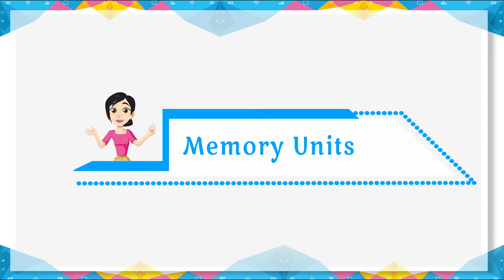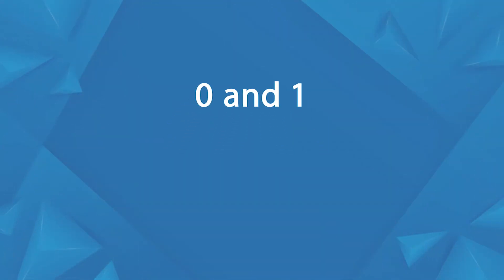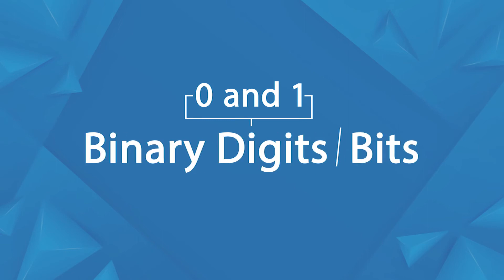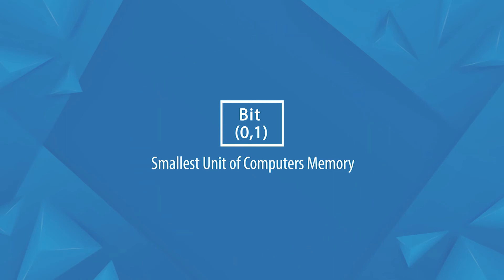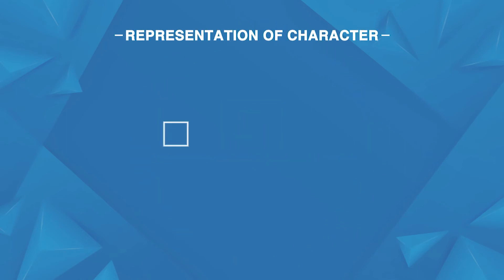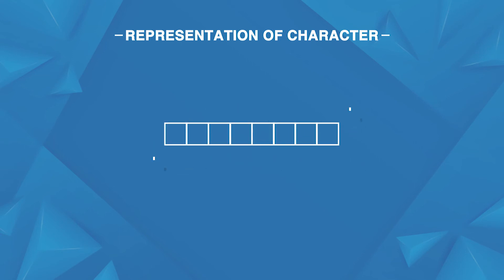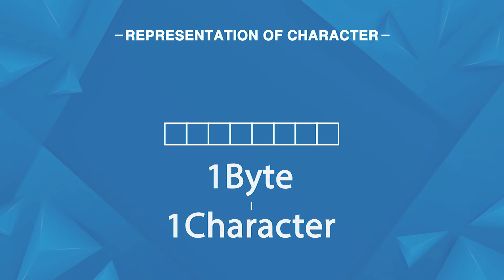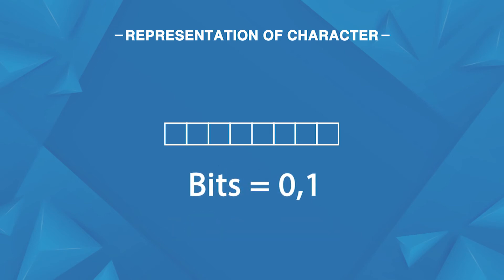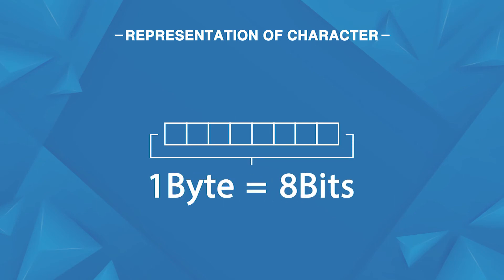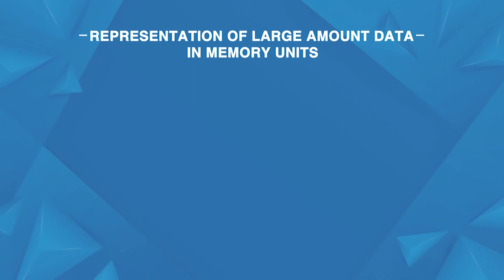Memory units: In computer memory, data is represented using two digits, 0 and 1. These two digits are called binary digits or bits. One bit is the smallest unit of computer memory. To represent each character in memory, a set of 8 binary digits is used. This set of 8 bits is called a byte. Therefore, 1 byte is used to represent one character's data. For example: 1 1 0 0 0 1 1 0. Higher data storage units are used to represent data in large amounts.